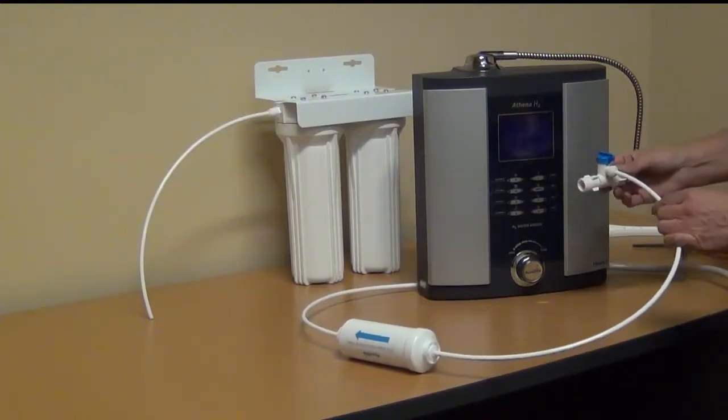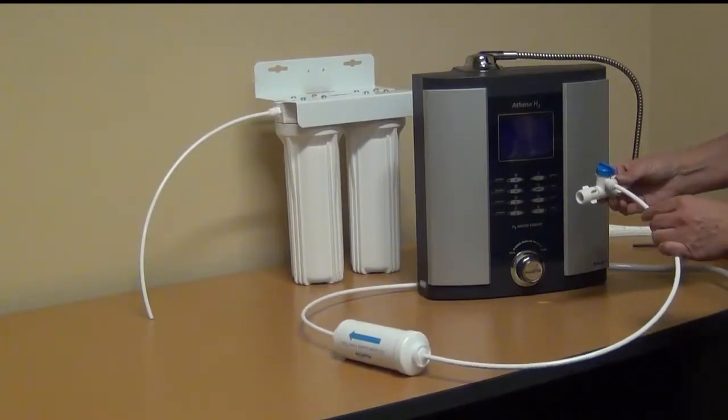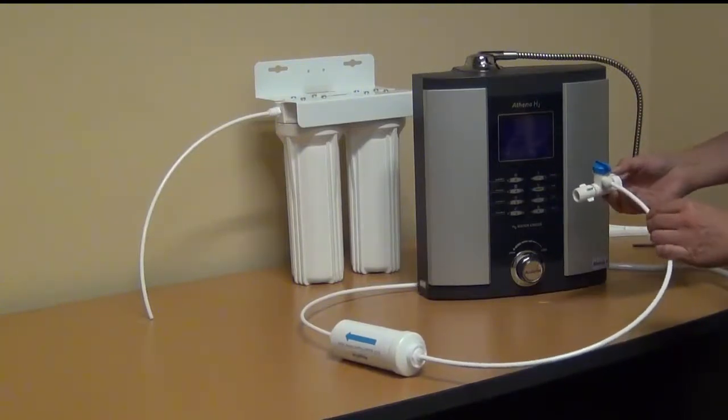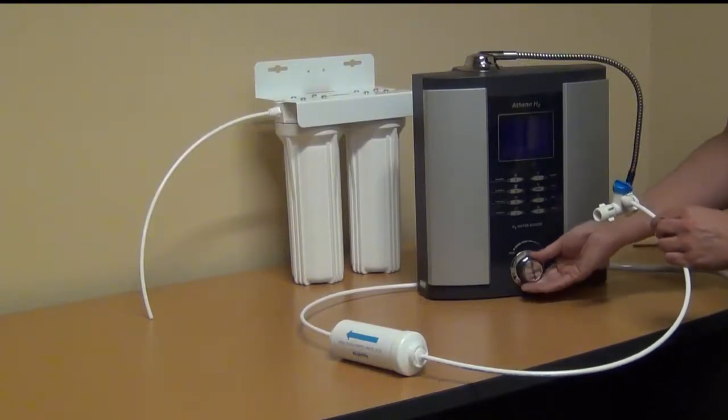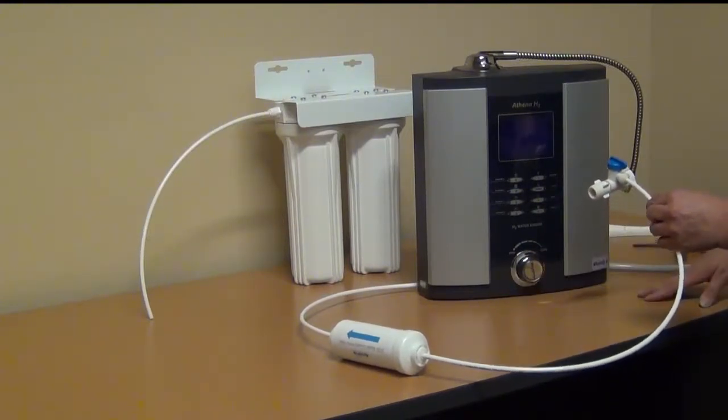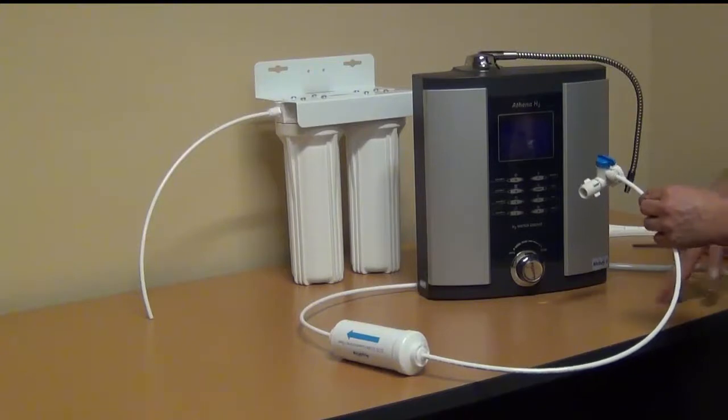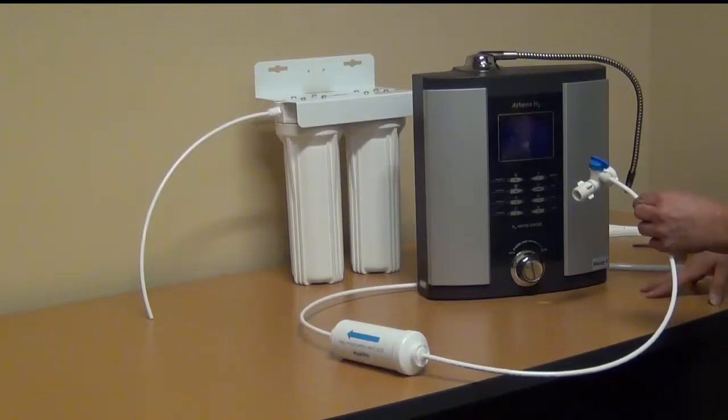Or if it's connected to your faucet diverter, you'll turn on your faucet and pull the pin on your diverter. Make sure that the knob on the front of your ionizer is turned all the way to the left, to the on position, and allow the water to start flowing through the ionizer.